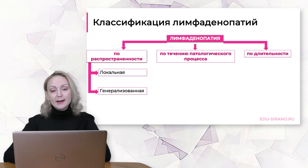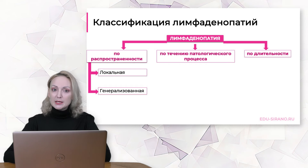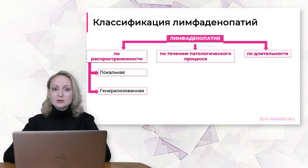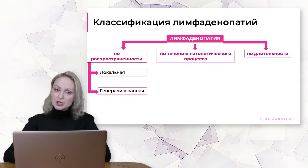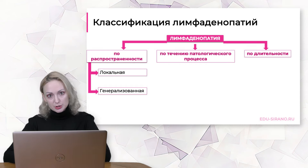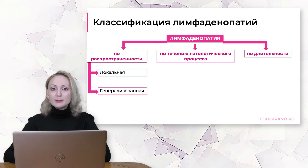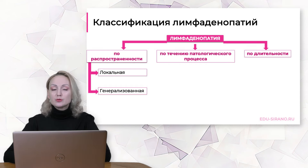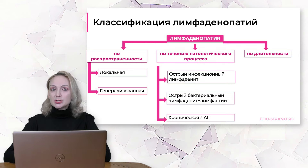Генерализованным считается увеличение лимфатических узлов в двух несвязанных между собой анатомических регионах, либо одновременное увеличение одной или нескольких групп периферических лимфатических узлов и внутригрудных или внутрибрюшных лимфатических узлов. То есть, если у ребенка увеличены только шейные лимфатические узлы – это локальная лимфаденопатия. Если же увеличены шейные, подмышечные узлы и определяются увеличенные узлы внутрибрюшной полости – это уже генерализованная лимфаденопатия.